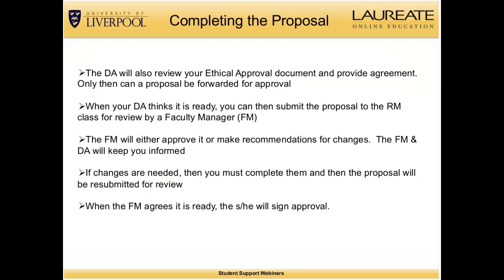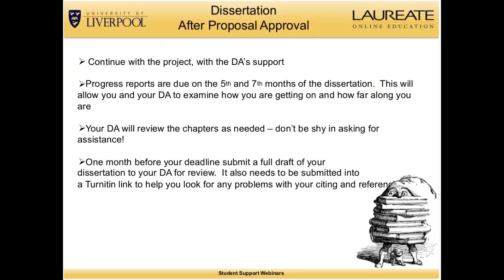Once you have obtained proposal approval, you will work on your dissertation with the DA's support. Progress reports are expected at the end of month five and the end of month seven, allowing both you and your DA to examine how well you're doing and whether you'll meet the nine-month deadline. Your DA will review chapters as needed, so don't be shy in asking for assistance. We strongly recommend submitting a full draft one month before your deadline for the DA's final comments, and also submitting a draft through the Draft Turnitin link to check that all work is cited and referenced correctly before your final submission.